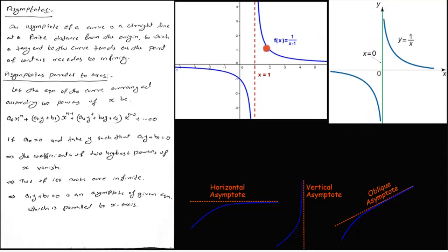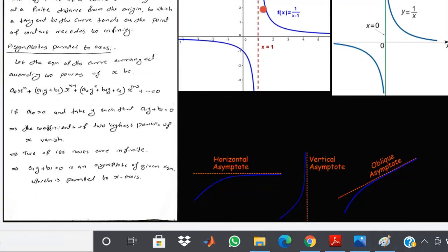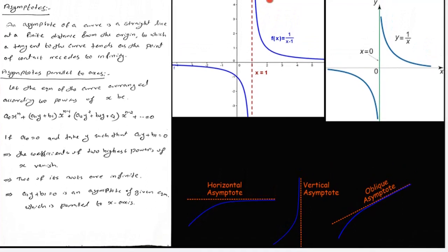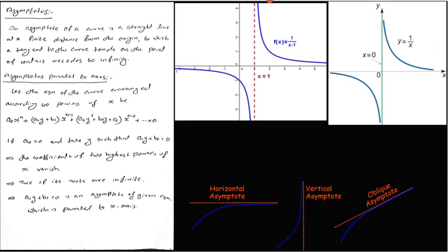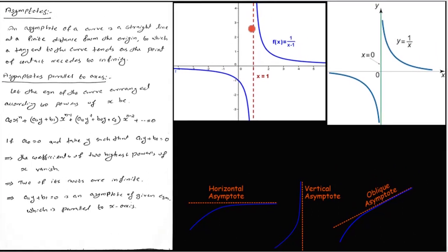We can see that f(x) = 1/(x − 1). The asymptote here is the x-axis. Where is x equal to 1? That is, x = 1 is also an asymptote.